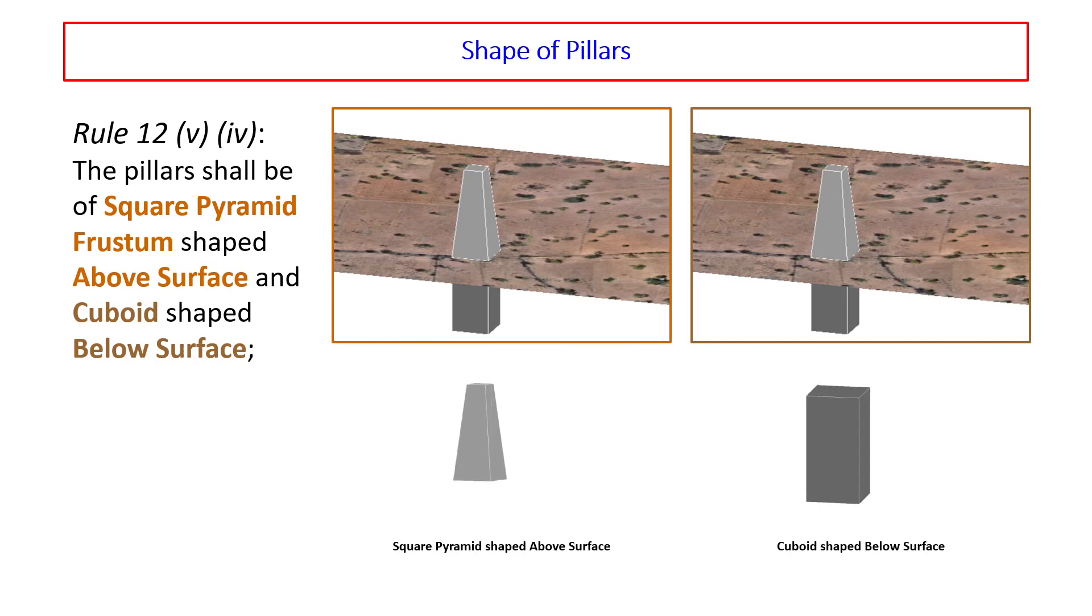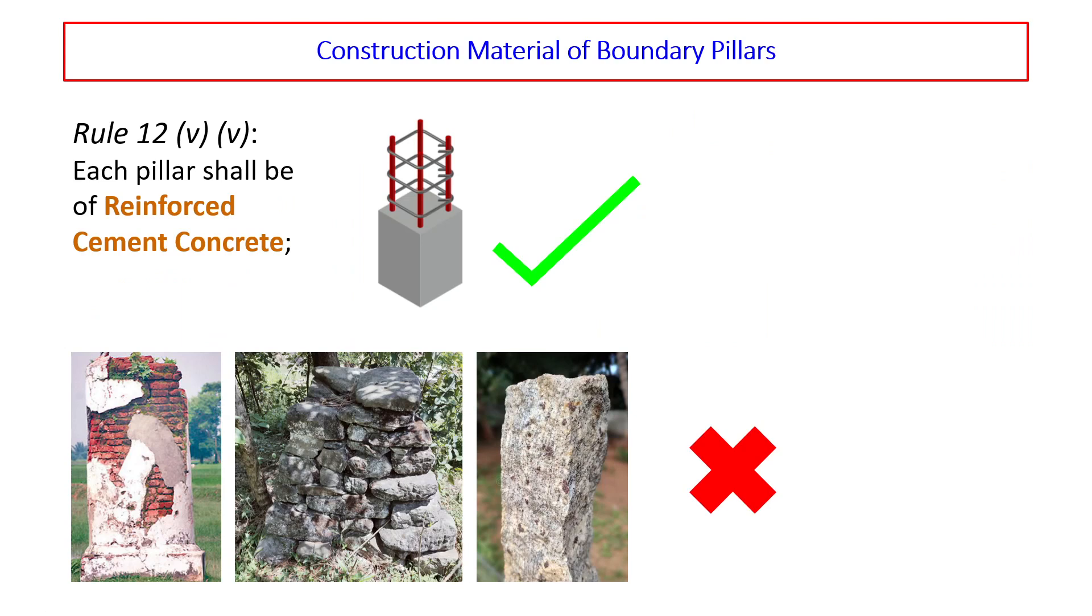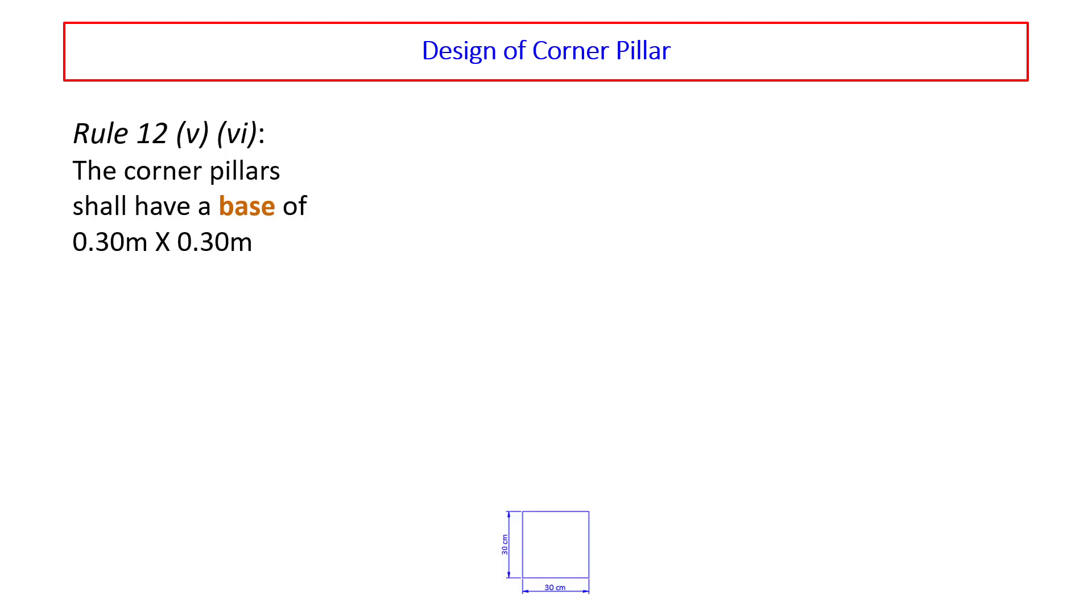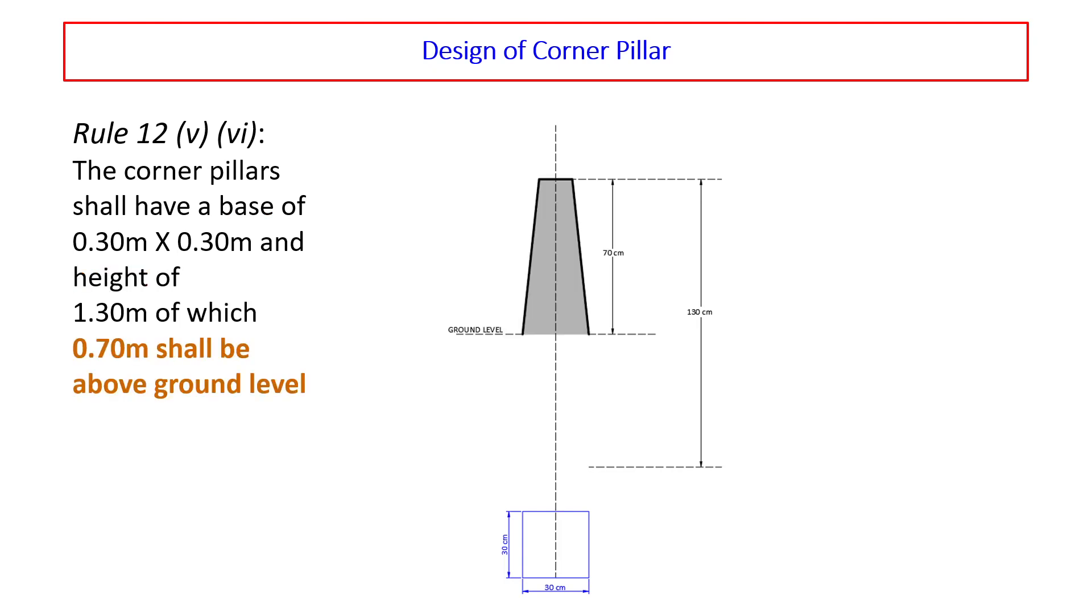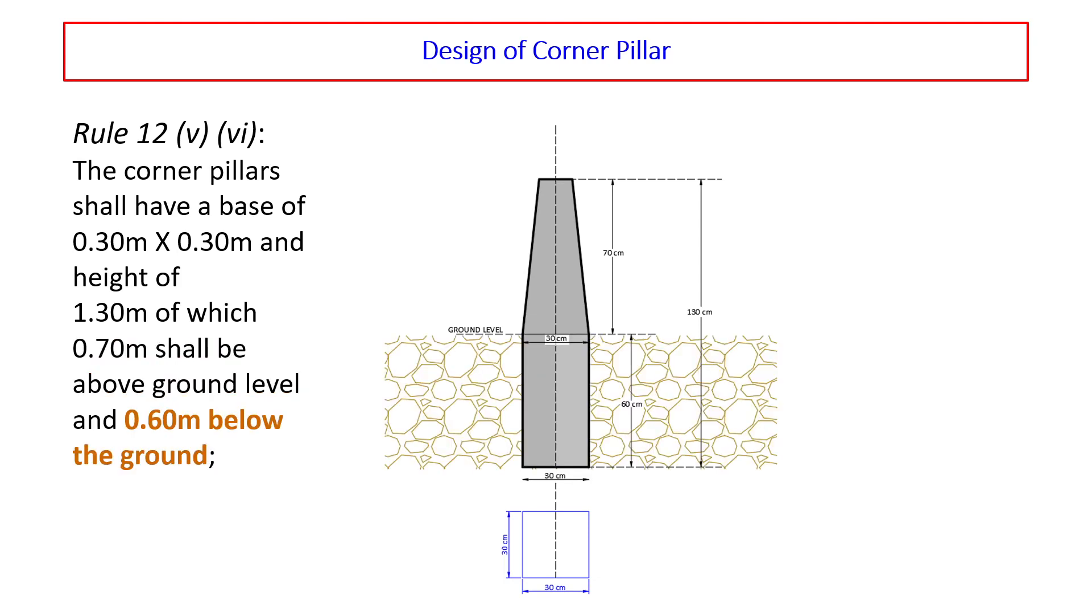Shape of the pillars: the pillar shall be square pyramid frustum shaped above surface and cuboid shaped below surface. The pillar should be made of reinforced cement concrete and no other kind of material should be used for constructing the boundary pillars. Coming to the design of corner pillar, we should have a base of 30 centimeter by 30 centimeter, overall height of 130 centimeter of which 70 centimeter shall be above ground level and 60 centimeter below ground level.